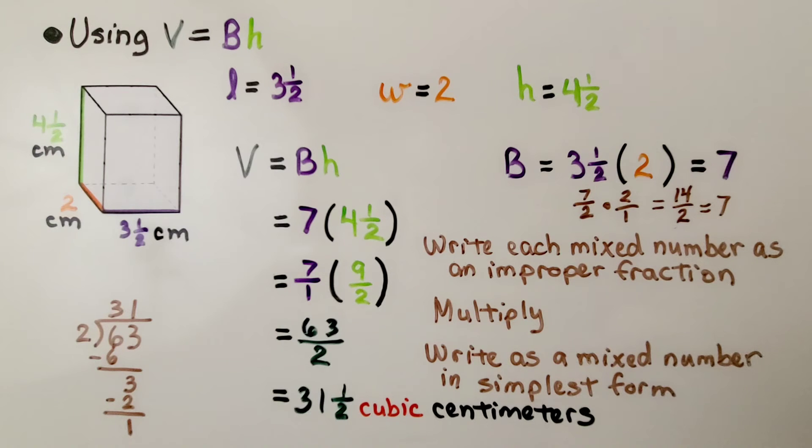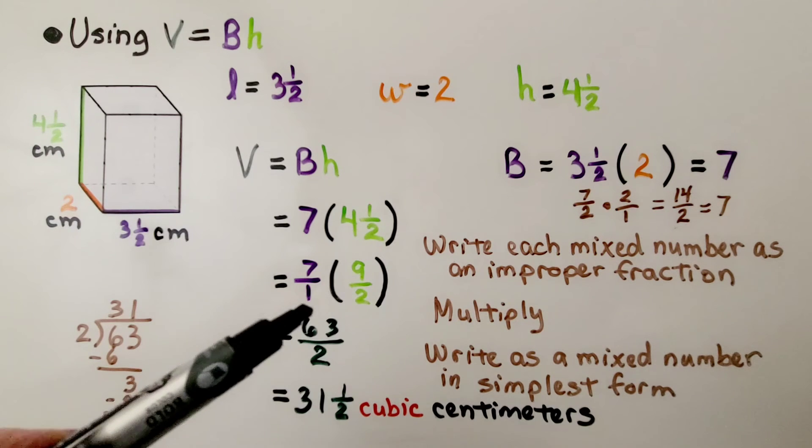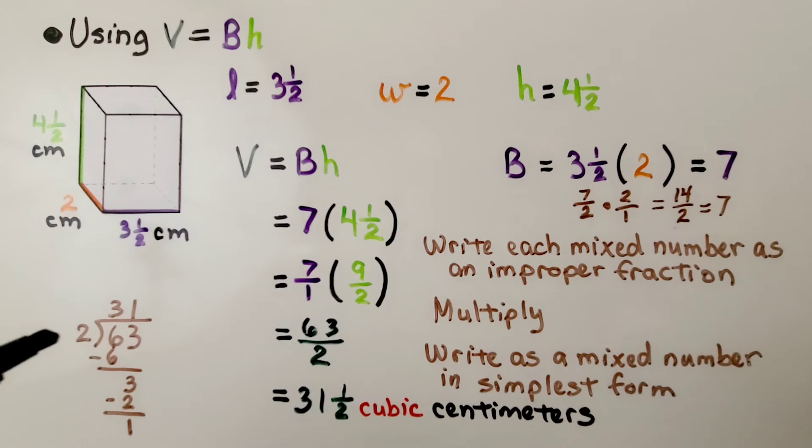Now we need to write it as a mixed number in simplest form. This is sixty-three divided by two. Two fits into sixty-three thirty-one times. We have a one remainder. That's going to be our numerator, and the two divisor is going to be our denominator. We have thirty-one and a half cubic centimeters.